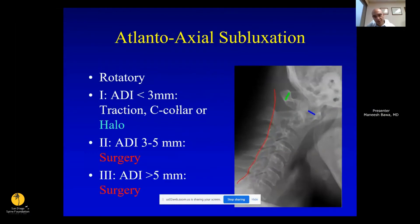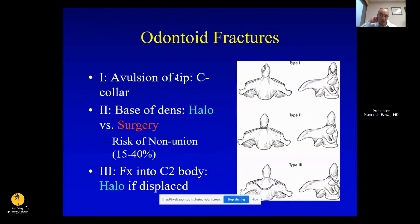C1-C2 rotatory subluxation is mostly prevalent in children. If the ADI is greater than 3 to 5 millimeters, they usually require traction for reduction and then surgery for posterior fusion. Odontoid fractures: Type 1 involves just the tip where the apical ligament inserts. Type 2 is at the base of the dens — higher risk of non-union, anywhere from 15 to 40 percent. Type 3 fractures go into the C2 body and can typically be treated in a collar; if displaced, they may need a halo.